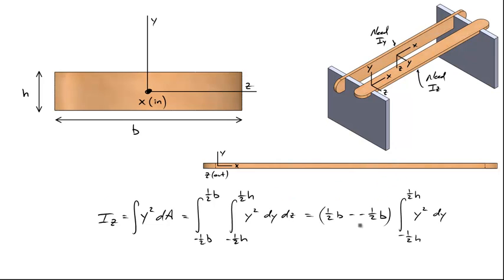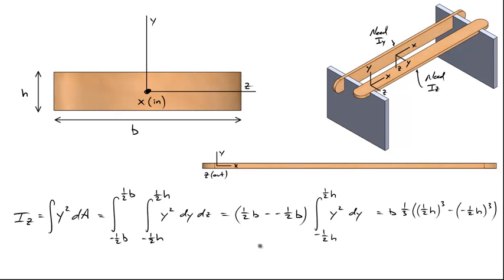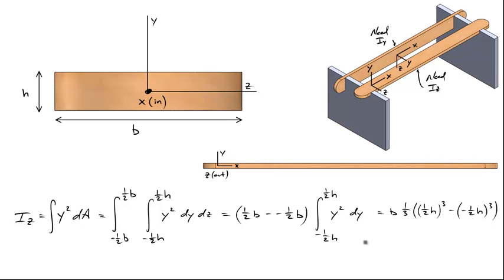Evaluating the outer integral, the inner integral is not at all a function of z, so I pulled that out and evaluated from one-half b to negative one-half b. This is just equal to b. And evaluating the second integral, I've got b times one-third times one-half h to the third power minus a negative one-half h to the third power. And that simplifies to what you're used to seeing in a textbook: I_z equals one-twelfth times b h cubed. We've got dimensions of length to the fourth, so inches times inches cubed would be inches to the fourth.